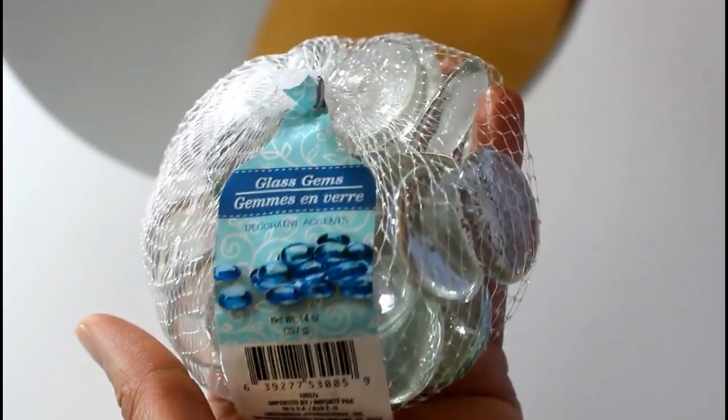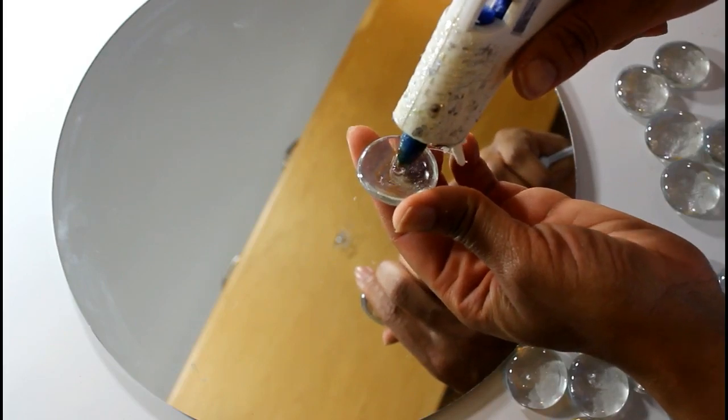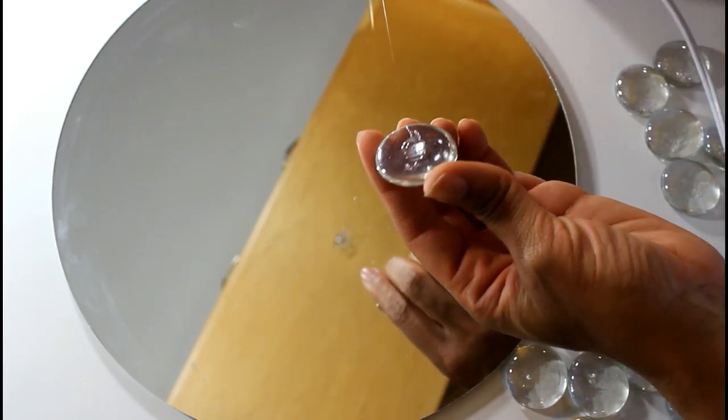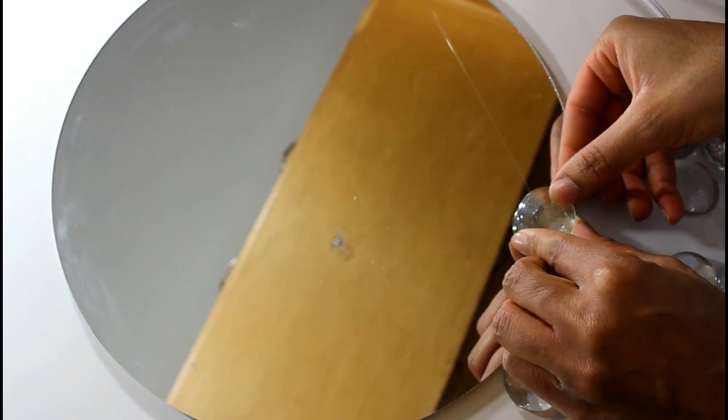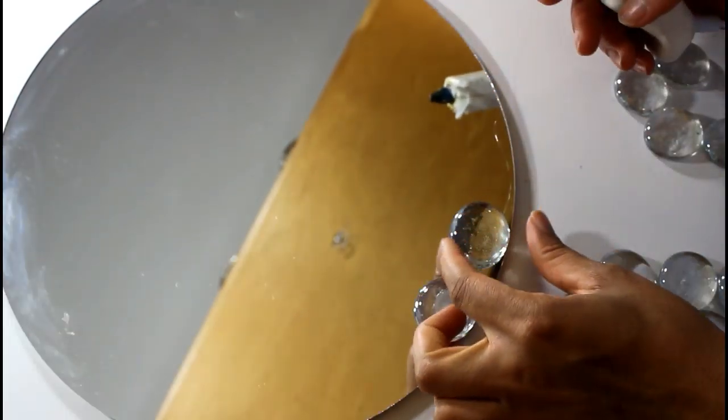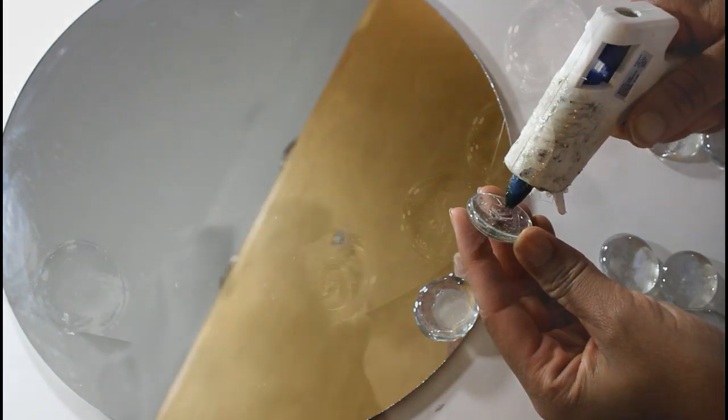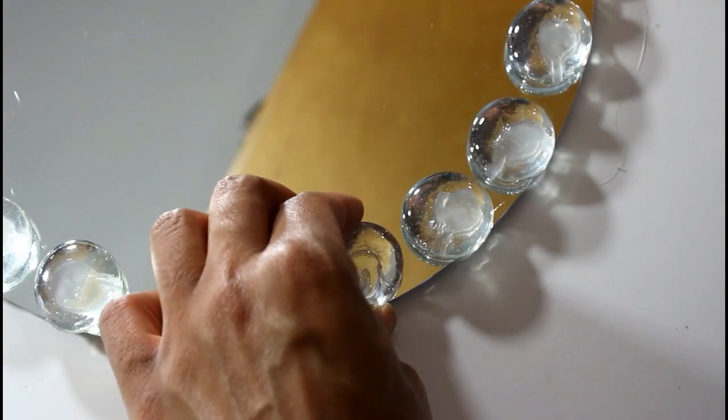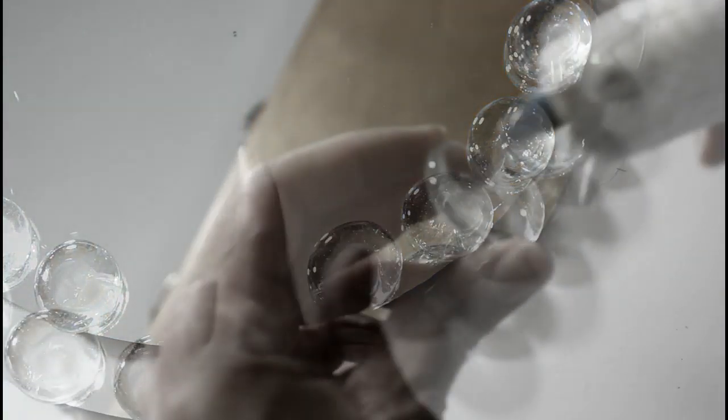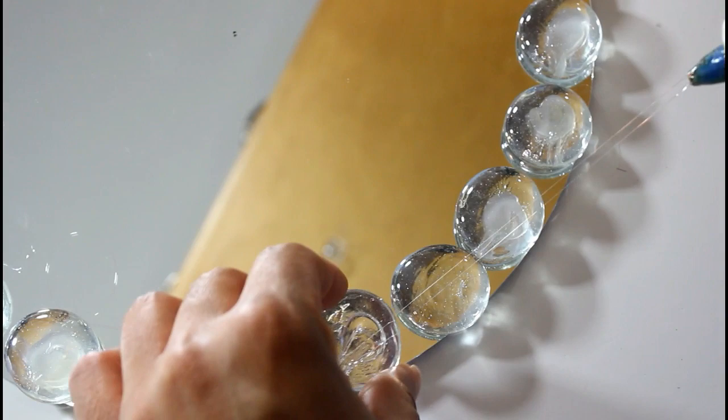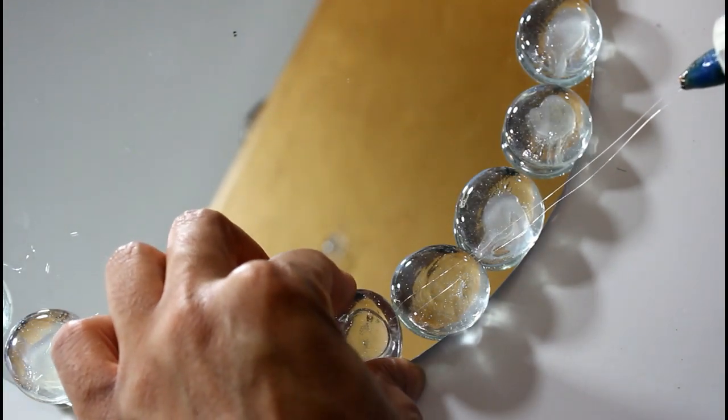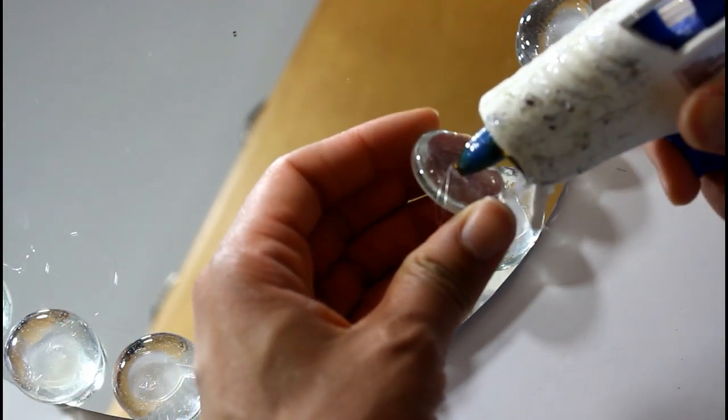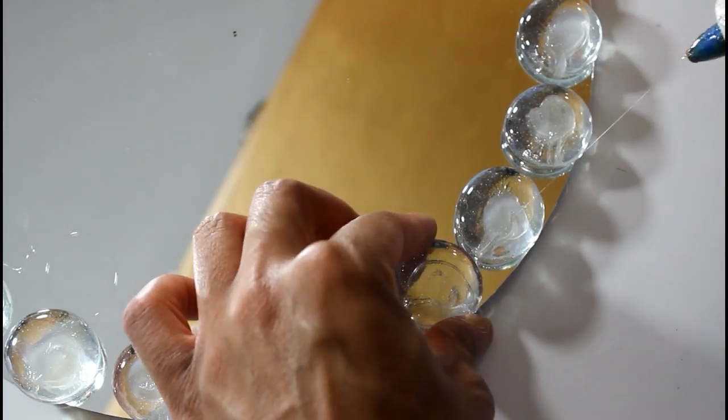I picked up these gems from the Dollar Tree. So what I'll be doing is just simply adding my gems around the perimeter of my mirror. It's just a really simple, easy DIY that I feel like anybody can do. And I do think this would even come out prettier if you use a glue that is a little bit more opaque like some E6000 or something like that.